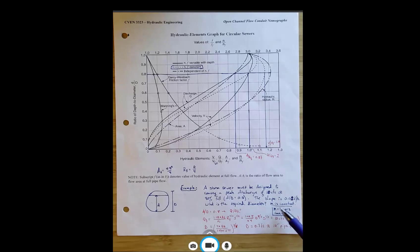We'll assume that n is constant. So n doesn't change as the depth increases. Why might n change with depth, Michael? If we increase the depth, why might our n value change?